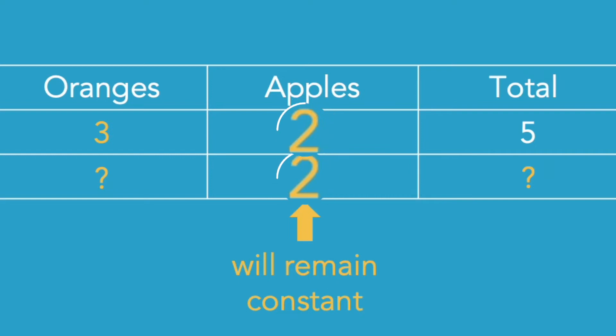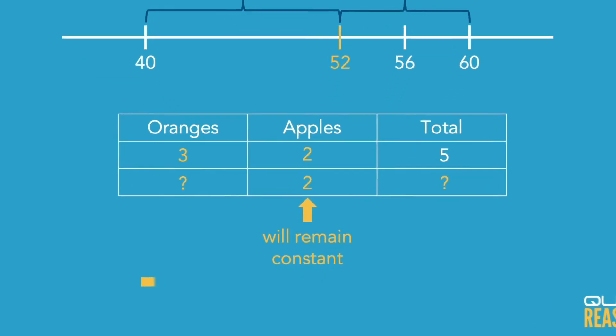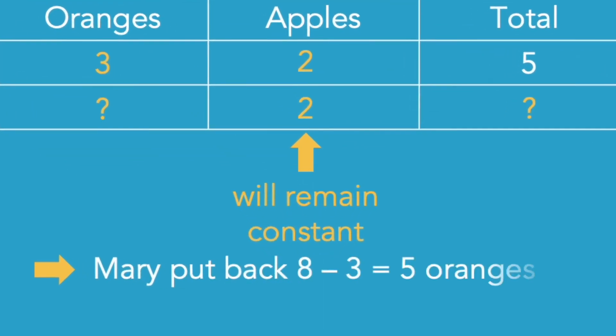How many oranges did Mary have in the beginning? It was 8. So how many did Mary put back if she went from having 8 oranges to having 3 oranges? She must have put back exactly 5 oranges.